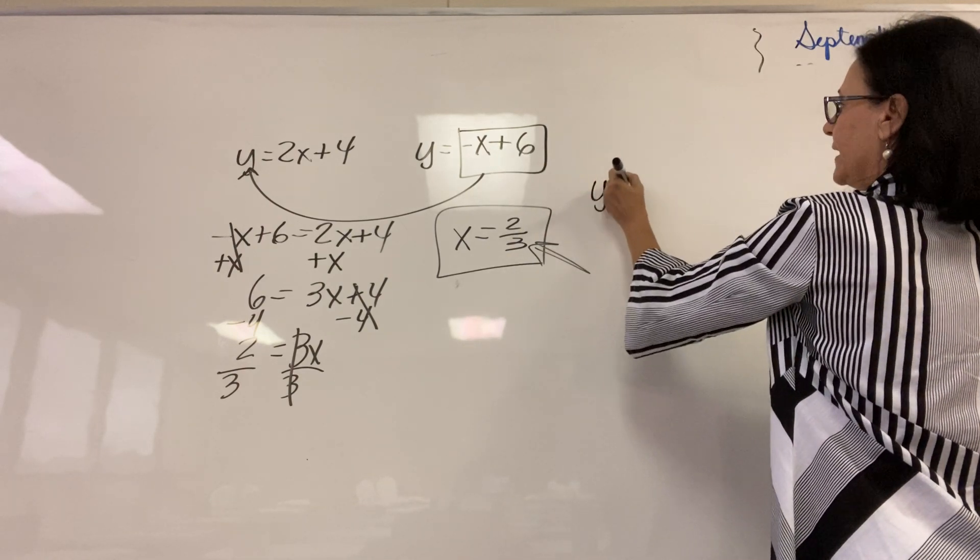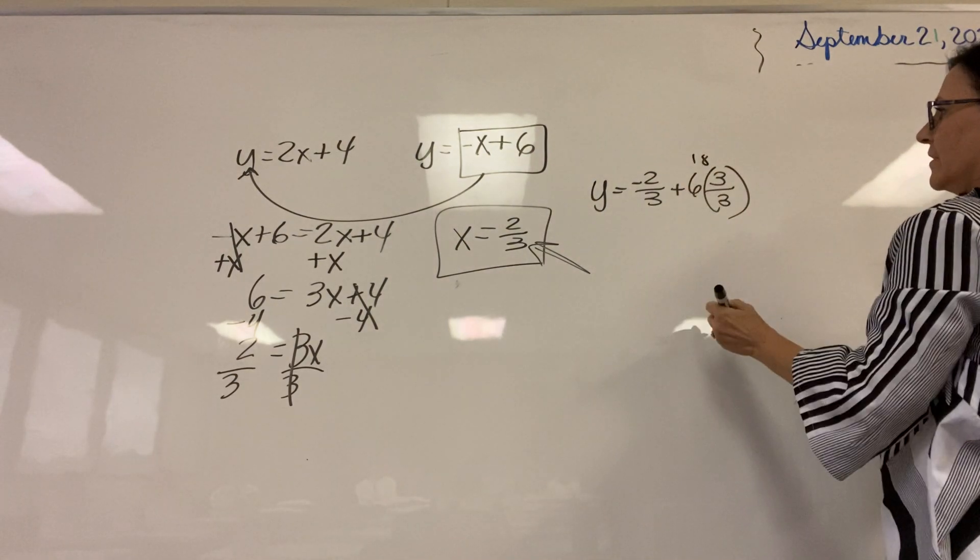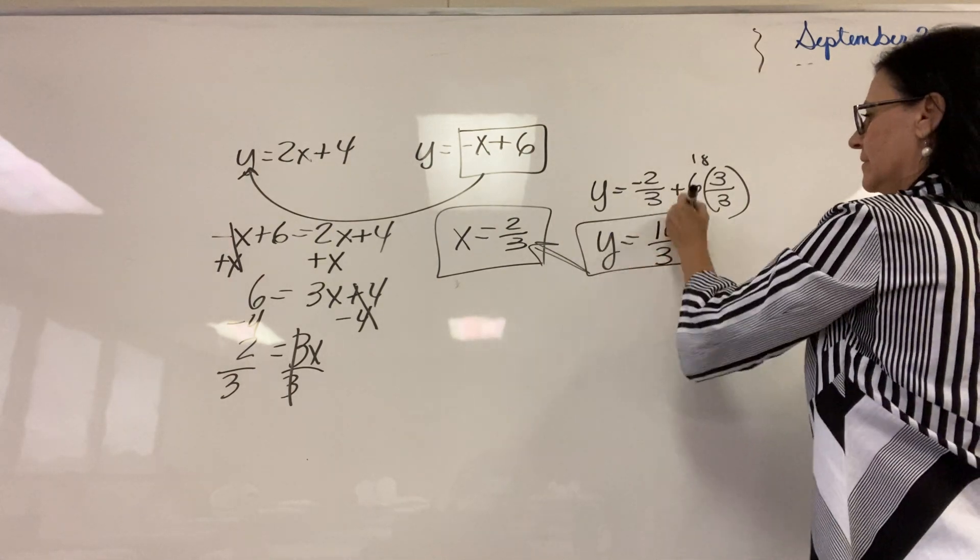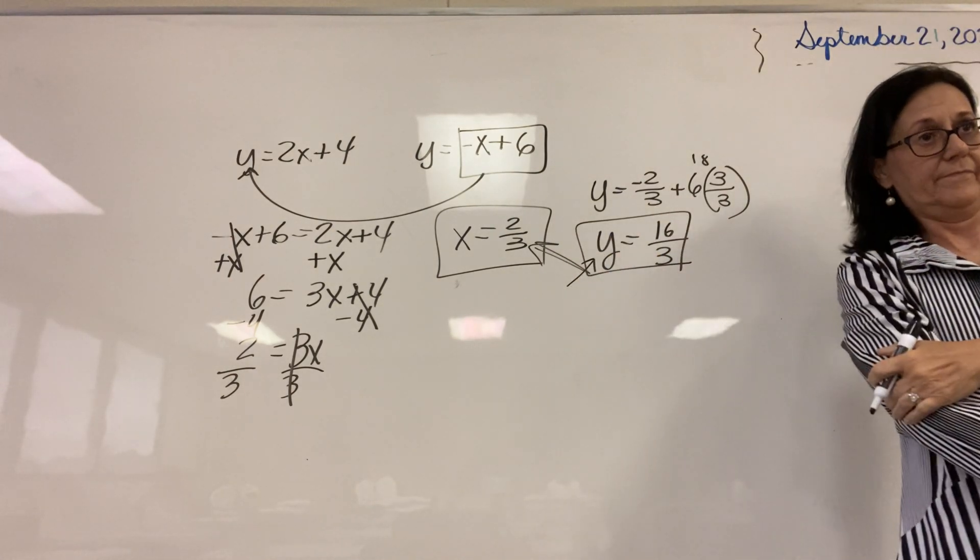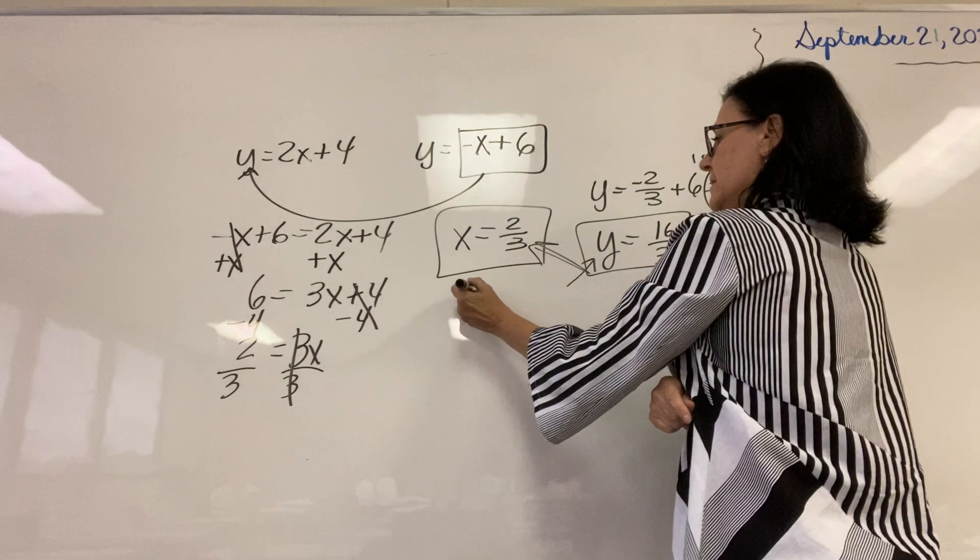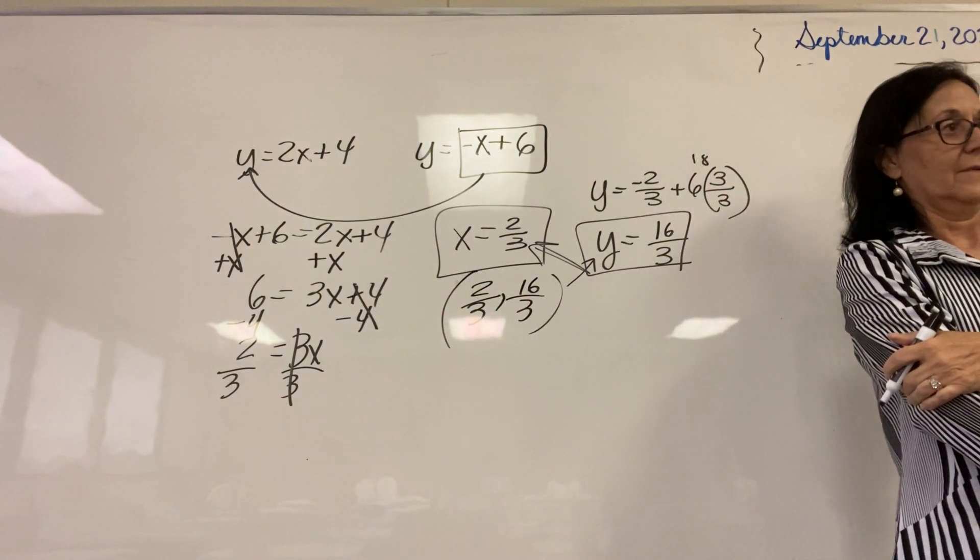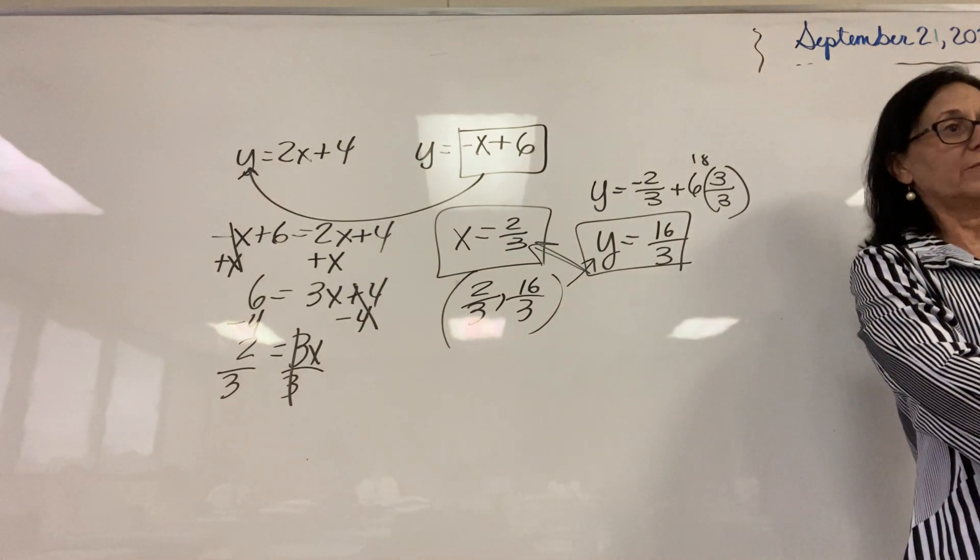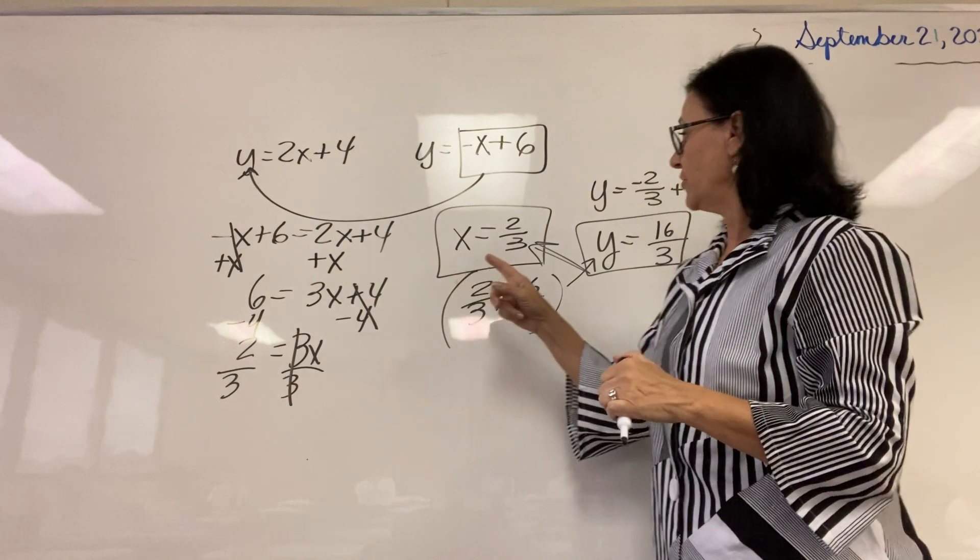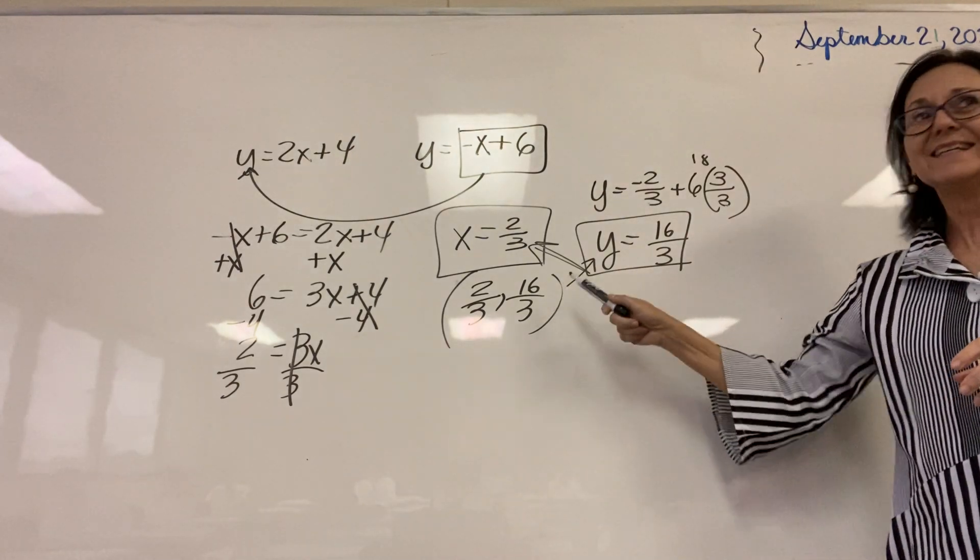So let's plug it into this one. y equals negative 2 thirds plus 6. We'll make a common denominator. So what? That's 18 thirds. What's the value of y? 16 thirds, 18 minus 2. So what do those points represent? It does represent a point on the graph. What else? What does this coordinate point represent? We've used substitution to solve for x and y. Actually, we've used substitution twice, right? The first time, we substituted in for y. The second time, we substituted in for x. We've used substitution twice. But what is this point?